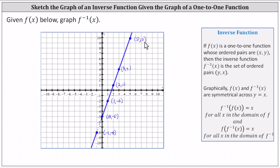Now if we take these points and interchange the x and y values and then plot the new points, those points will be on the graph of the inverse function. If the point negative one comma negative eight is a point on the graph of f of x, then the point negative eight comma negative one will be a point on the graph of the inverse function. If zero comma negative five is a point on the graph of f of x, then the point negative five comma zero is a point on the graph of the inverse function. If the point one comma negative two is on f of x, then the point negative two comma one is a point on the graph of the inverse function.